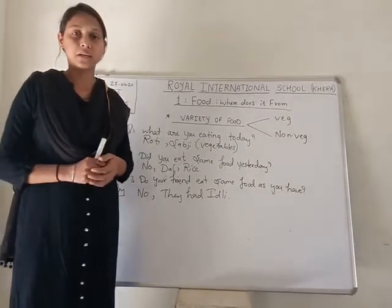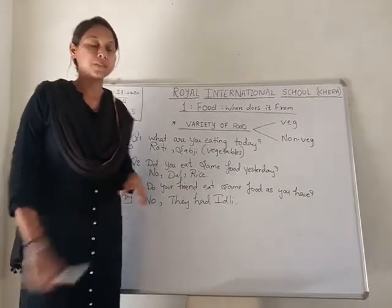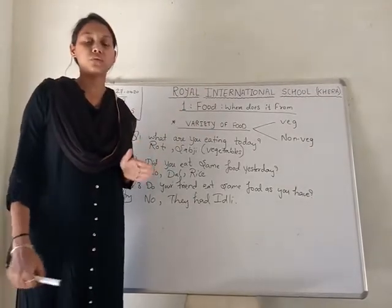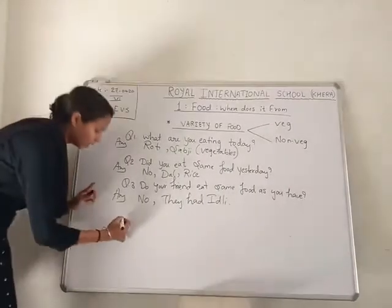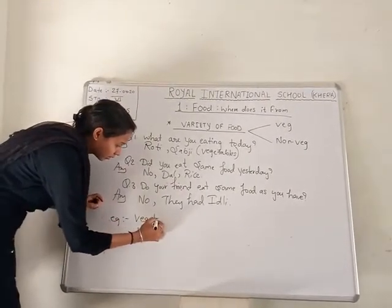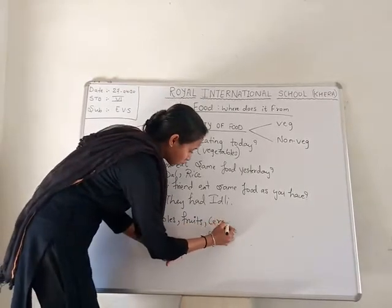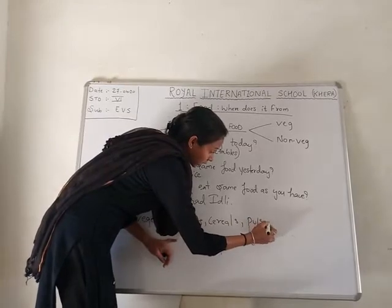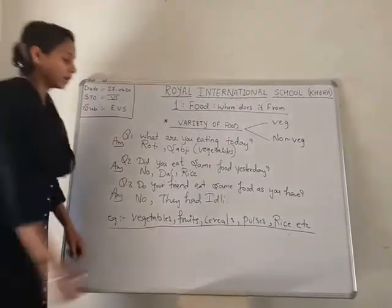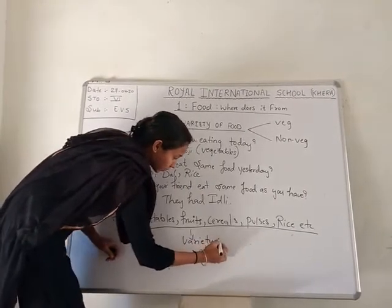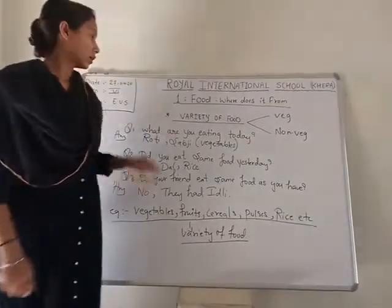So there are many varieties of food. You don't eat the same food daily — you eat a variety of foods. This is our topic: variety of foods. This includes vegetables, fruits, cereals, pulses, dal, rice, etc. This is the variety of foods which we change daily; we don't follow the same food.